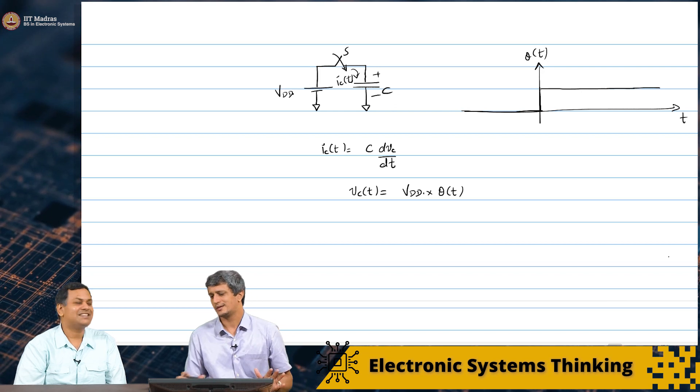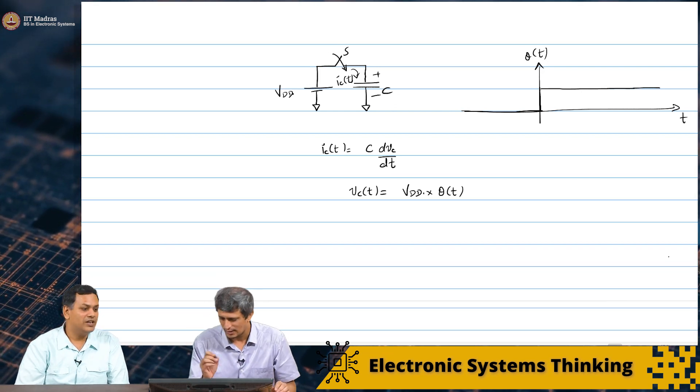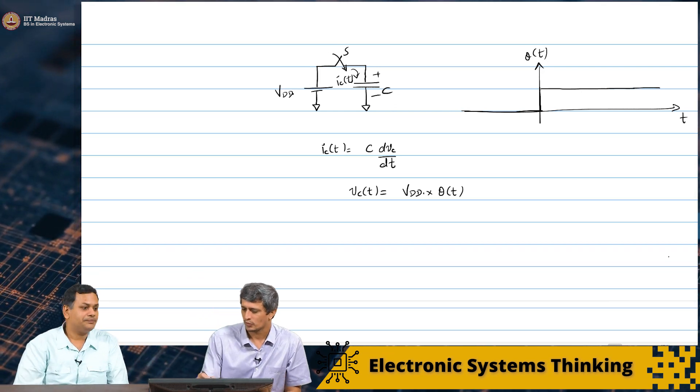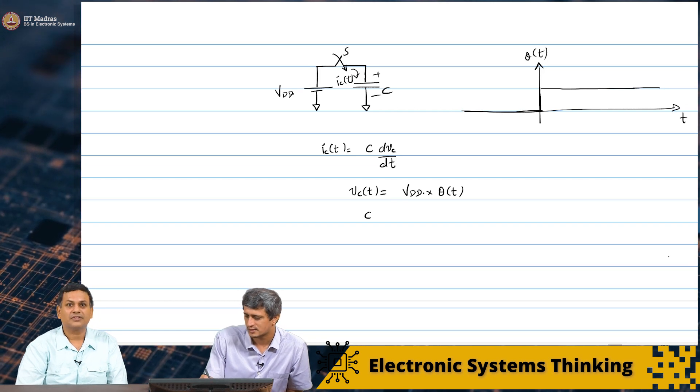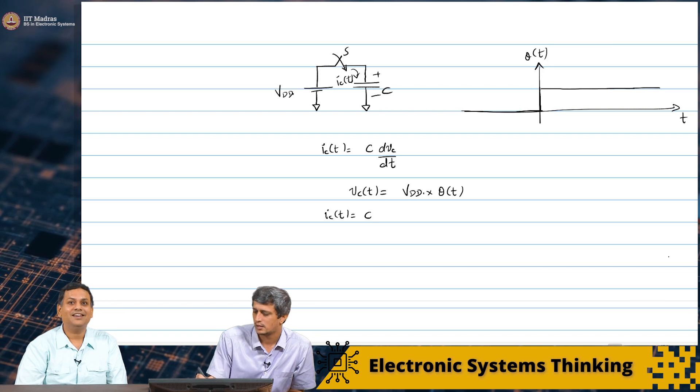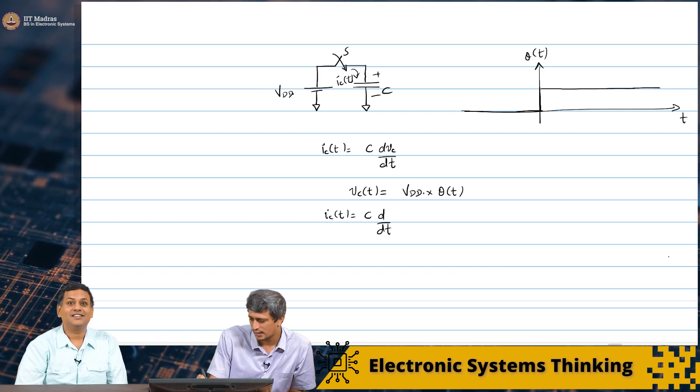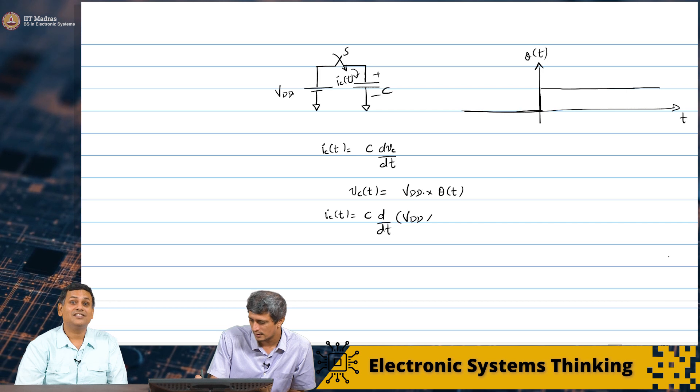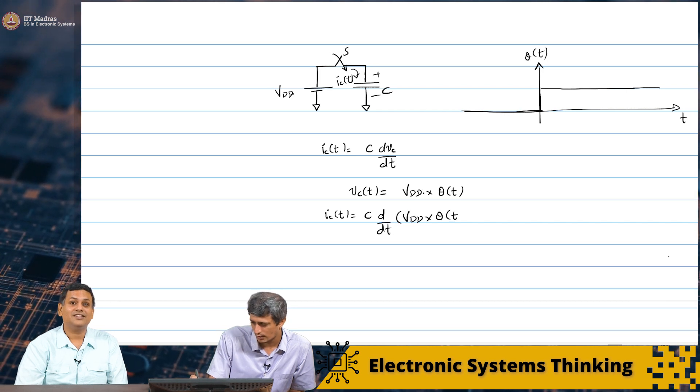What is Vc of t? It is Vdd. Vdd. At yes. So, this is I will write this as into some theta of t. So, that theta of t is like this. The t theta of t it is 0. It is 0. Till here and then it goes to Vdd at t equal to 0. It sort of, it is basically like a step. Right. It is a step. Exactly.